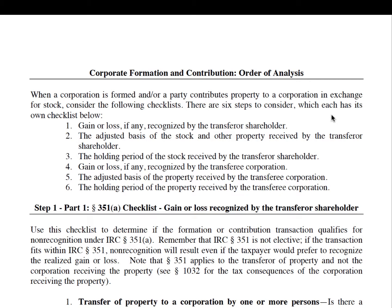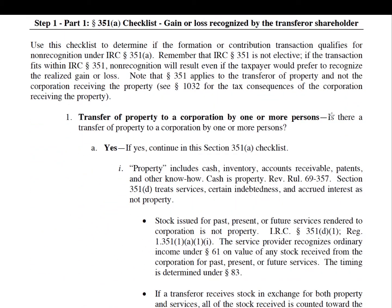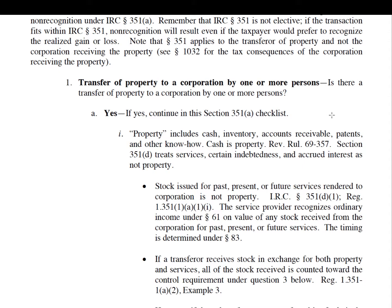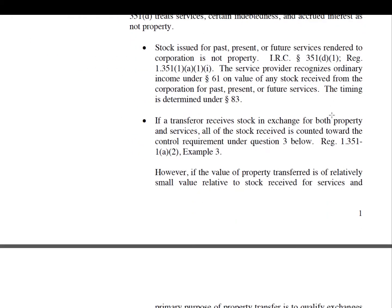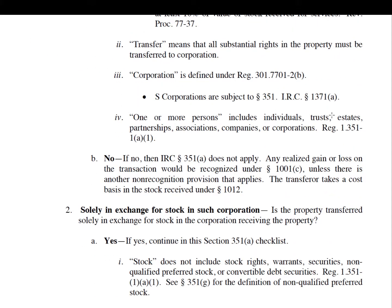In 351B, it provides a special non-recognition rule when the second requirement of the 351A checklist is not met. However, requirements one and three must be met. Let's do a refresher on the 351A checklist. The first requirement is a transfer of property to a corporation by one or more persons. The second requirement is solely in exchange for stock in such corporation. It's possible that a transferor can receive property other than stock, but non-recognition under 351A is not available. However, under 351B, it's still possible.